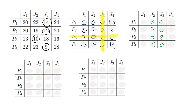In the first column J1, the smallest value is 3, so we subtract every value in that column by 3. 6 minus 3 gives us 3, 8 minus 3 gives us 5, 3 minus 3 gives us 0, and 13 minus 3 gives us 10. In the final column J4, the smallest value is 6, so we subtract every value by 6. 10 minus 6 is 4, 8 minus 6 is 2, 6 minus 6 is 0, and 19 minus 6 is 13.